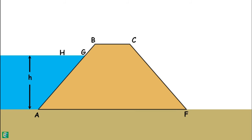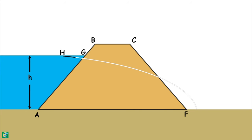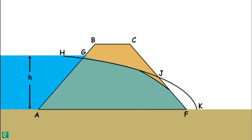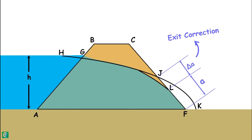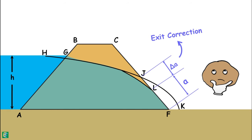When beta is less than 90 degrees, the basic parabola goes outside the downstream face. The base parabola cuts the dam at the downstream at some point J and meets the horizontal at point K. The actual phreatic line meets the downstream discharge face tangentially at some point L, below point J. This deviation — the distance by which the basic parabola has to be shifted to obtain the actual phreatic line — is called the exit correction, denoted as delta a. The distance JF is written as a plus delta a.